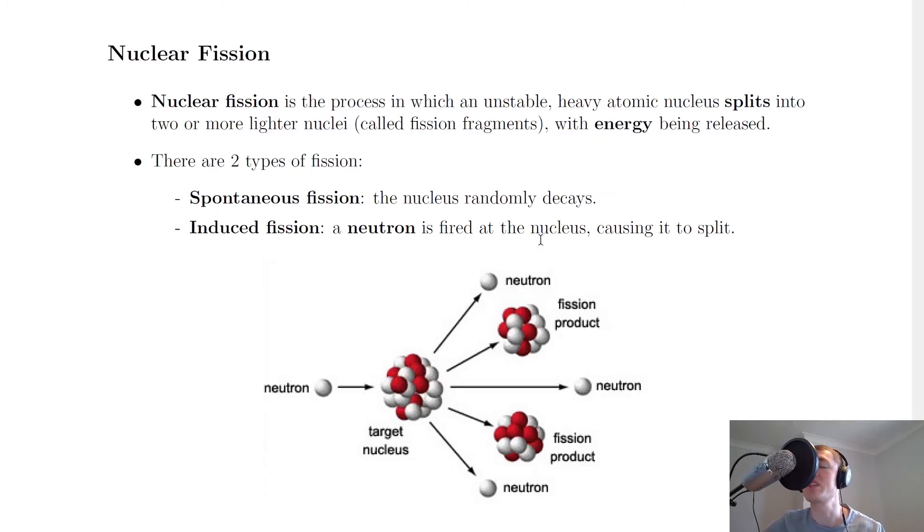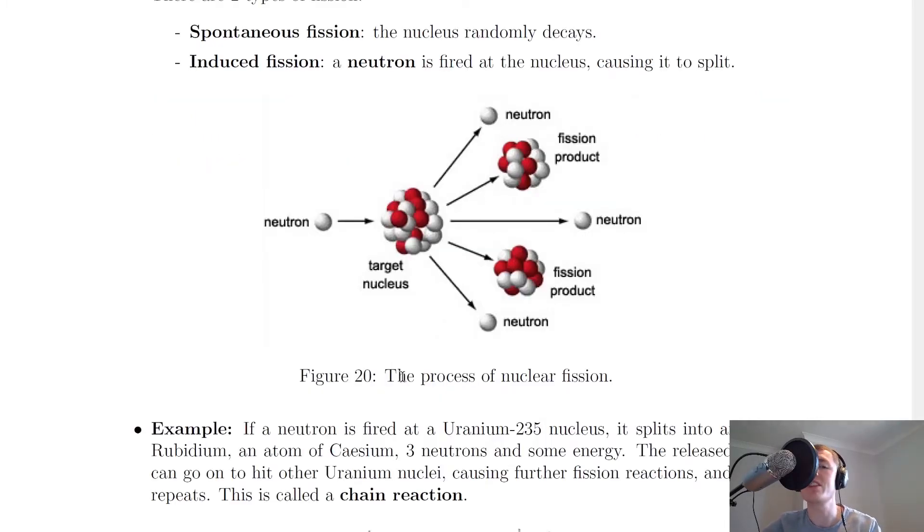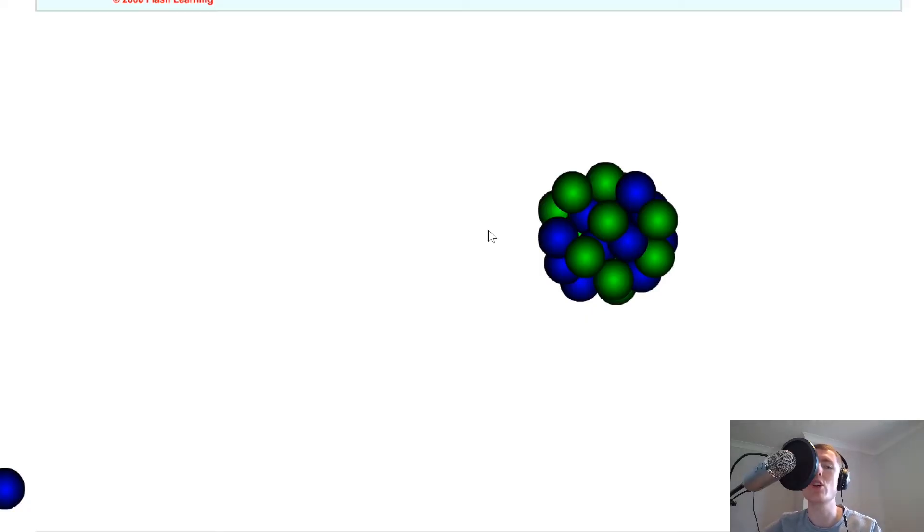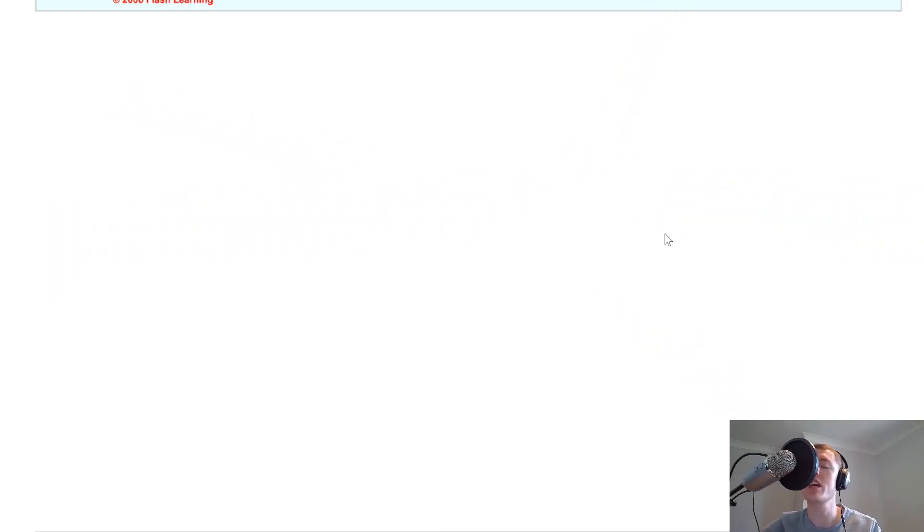So just to help you visualize an induced fission reaction, I'm going to show you a quick animation. So here we have a nucleus and a neutron down in the corner. If I click play here, an incident neutron comes and hits the nucleus causing it to split apart into fission fragments.